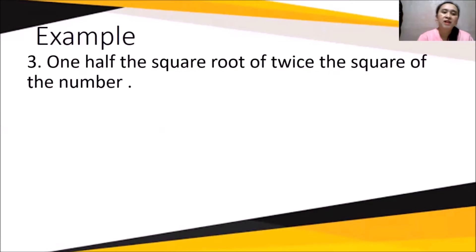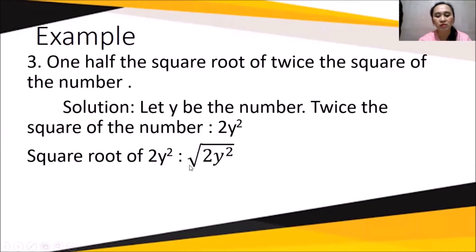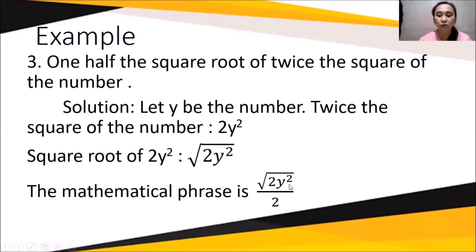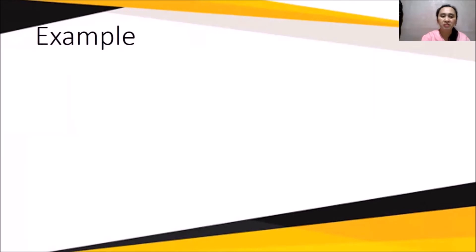Another example: 'one half of the square root of twice the square of the number.' Let y be the number. Twice the square of the number is 2y squared. The square root of 2y squared is √(2y²). Therefore, the mathematical phrase is (1/2)√(2y²), or one half of the square root of 2y squared. I hope those three examples of translating verbal phrases to mathematical symbols are clear.